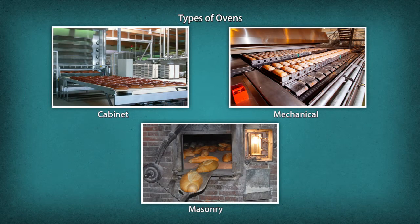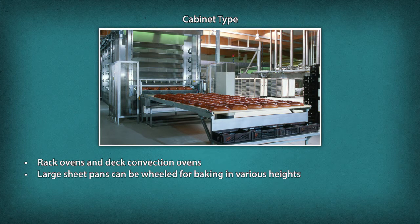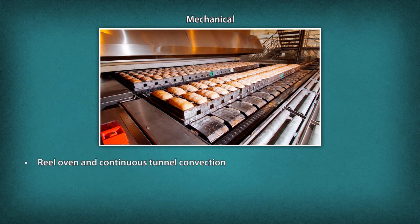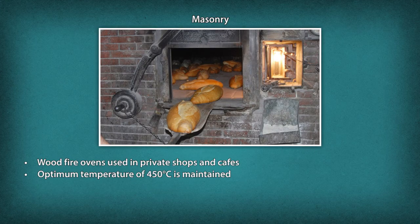Types of ovens. Ovens are the most important equipment required in the baking process. Different types of baking products require different baking processes; hence, different types of ovens are used. Cabinet type: rack ovens and deck convection ovens — large sheet pans can be wheeled for baking at various heights. Mechanical: reel oven and continuous tunnel convection — the product moves on a conveyor belt inside the oven, useful for uniform baking of biscuits. Masonry: wood fire ovens used in private shops and cafes, with an optimum temperature of 450 degrees centigrade maintained.